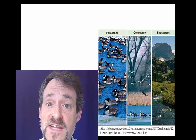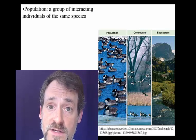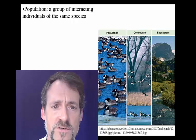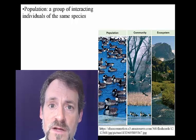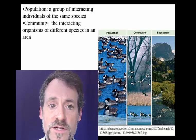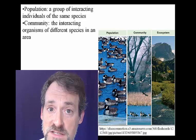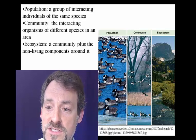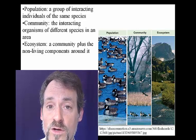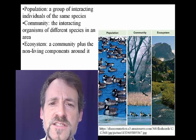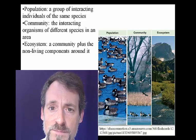There are, of course, specialized names for these three different levels. A population is a group of interbreeding or at least interacting individuals of the same species. The community level is this middle one — that's where you have interacting organisms from many different species. And this largest level is the ecosystem, where you're concerned about one or more communities, plus the non-living components that are found around them.